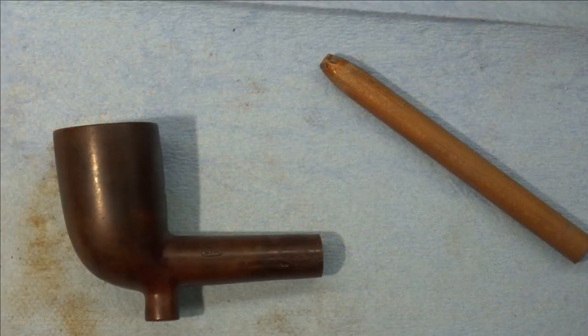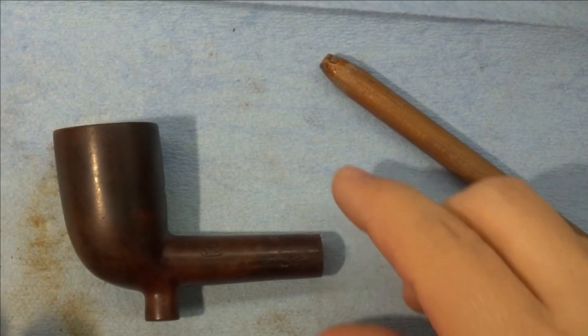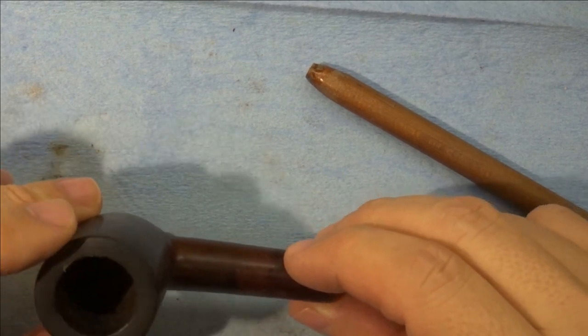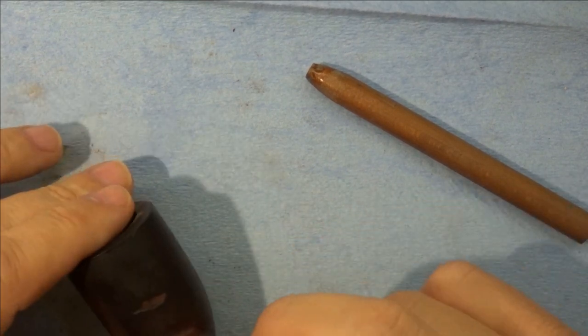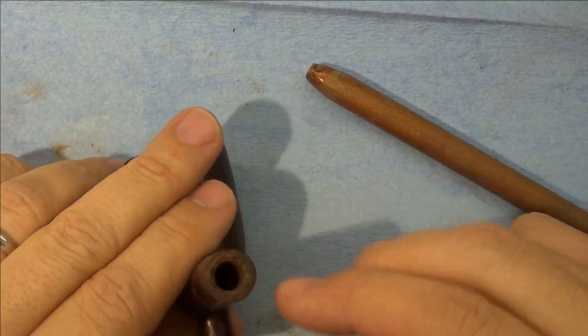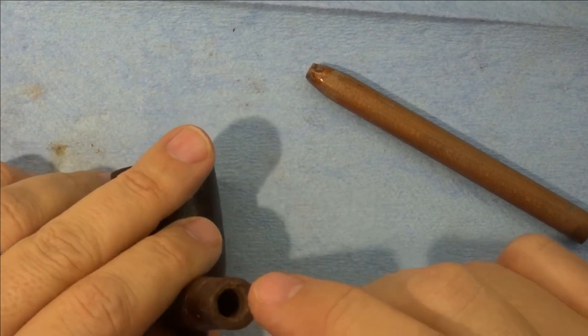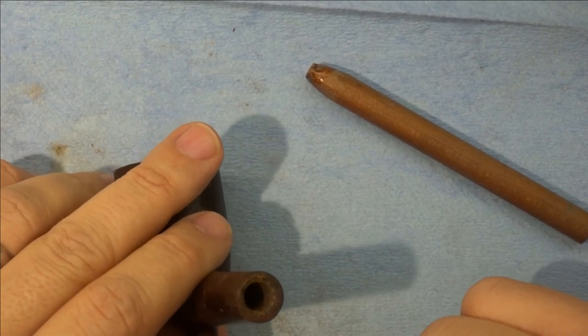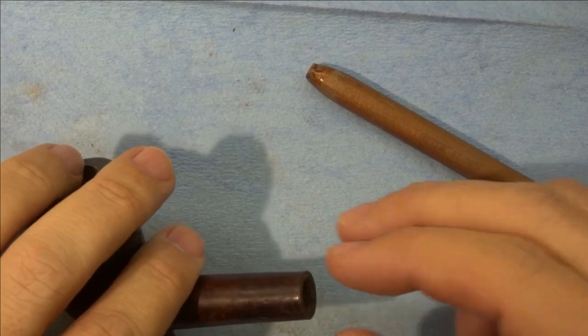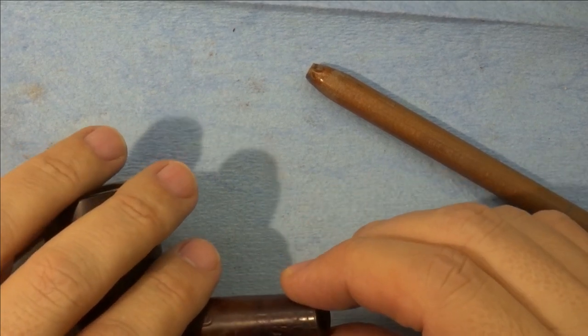Hello friends, welcome back to the shop and to this series on this Ben Wade pipe that we are restoring for my friend Jose. When last we left it, we had just gotten the bone tenon out and exposed the threads, which we're going to ream away because we're going to make a nice Delrin slip fit tenon for this.